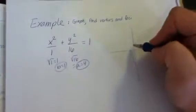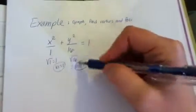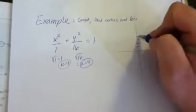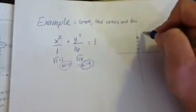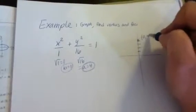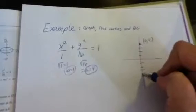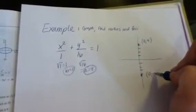So on our graph we're going to go in the y direction—notice the y above the 16—so the y direction, a: 1, 2, 3, 4, there's one vertex at (0, 4). 1, 2, 3, 4, there's another vertex at (0, -4).